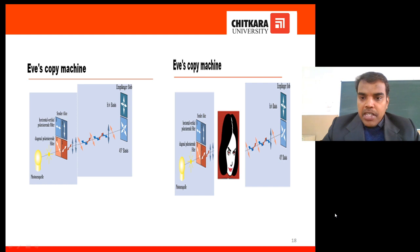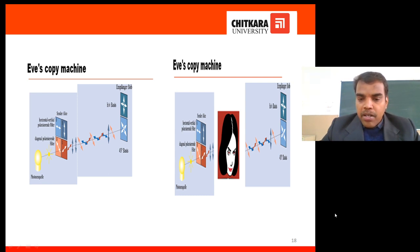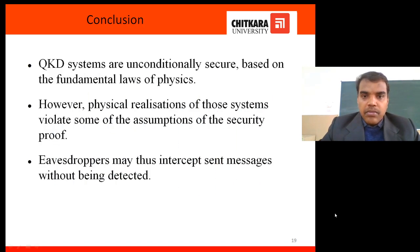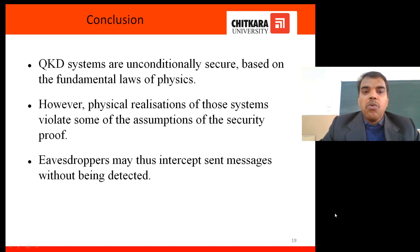The no-cloning principle means that whenever a hacker tries to copy or read the information, the light particles are disturbed and the information is not correctly received by Bob. Both Alice and Bob immediately know there is a hacker. The conclusion is that QKD is unconditionally secure, based on the fundamental laws of physics.